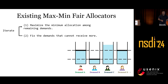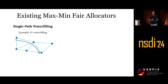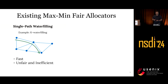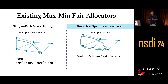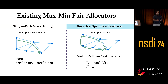This high-level architecture can capture many existing allocators, which usually differ only in specific assumptions. Broadly, we have two types. One assumes demands can only be routed on a single path — this enables faster algorithms, but they end up being unfair and inefficient because they ignore path diversity. The second group are iterative optimization-based methods that allow splitting traffic over multiple paths, and they need to solve optimizations to find the proper split ratio. These are fair and efficient, but slow. So you can see the trade-off: one being fast but unfair, the other being fair and efficient but slow.